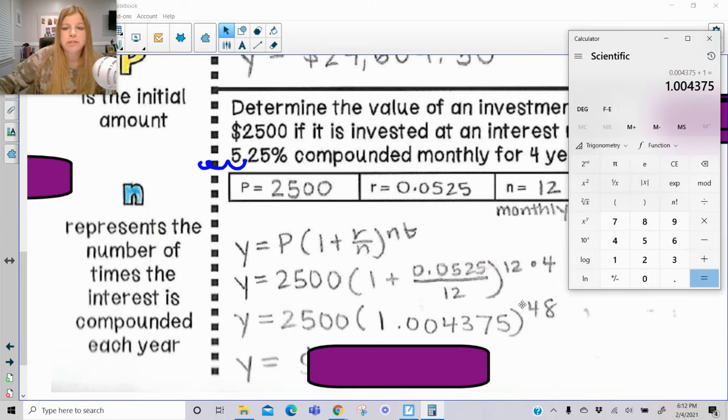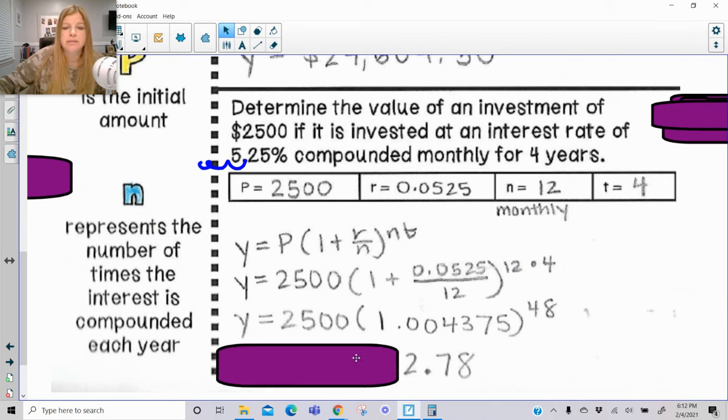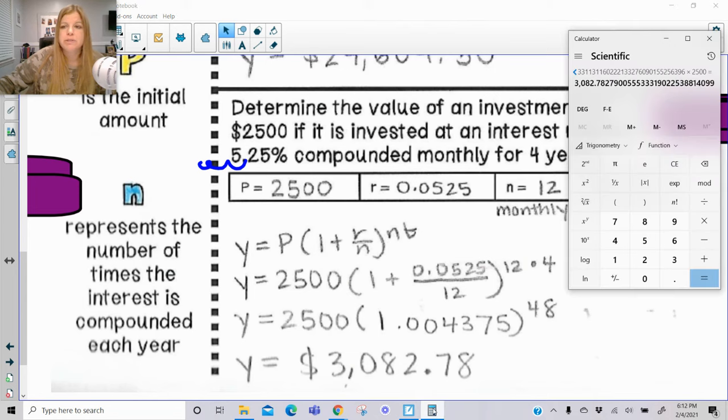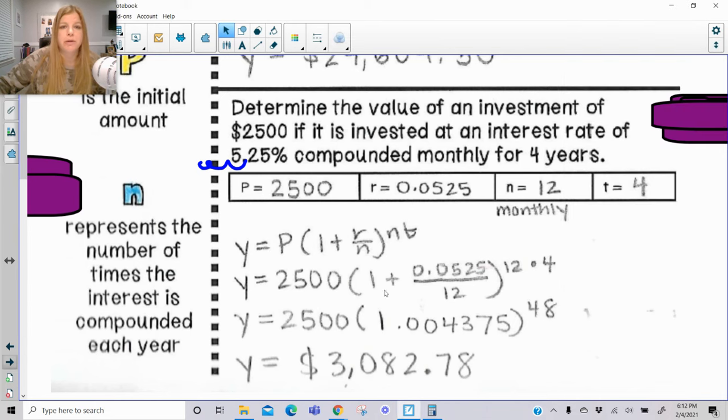And now, while that number is fresh in your calculator, let's raise it to the 48th power. And then multiply by the principal of 2,500, and I get $3,082.78. I'm just going to put the calculator back up so you can see. So here's the process. We do the division, add 1, raise that to the exponent, and then multiply by the principal in front. Let's try another one.